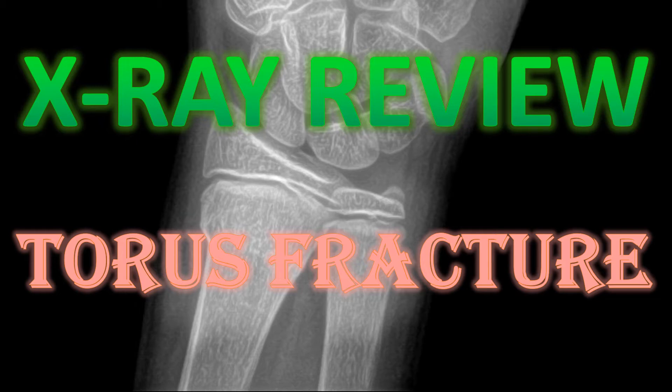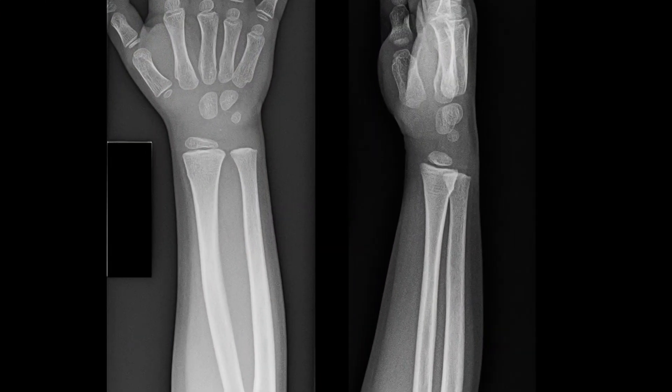Welcome to X-ray Review. This is a quick video about torus or buckling fractures, which typically occur in kids, usually as a result of a fall on an outstretched hand — a FOOSH injury. The most common location is the distal radius. This is a classic example of a torus fracture. These are incomplete fractures usually of the shaft of a long bone, and what you'll see is a bulging out of the cortex.